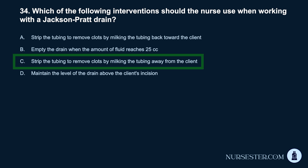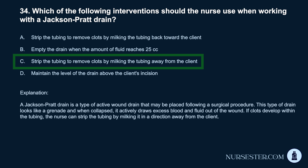Correct answer: C. Strip the tubing to remove clots by milking the tubing away from the client. A Jackson-Pratt drain is a type of active wound drain that may be placed following a surgical procedure. This type of drain looks like a grenade and, when collapsed, it actively draws excess blood and fluid out of the wound. If clots develop within the tubing, the nurse can strip the tubing by milking it in a direction away from the client.